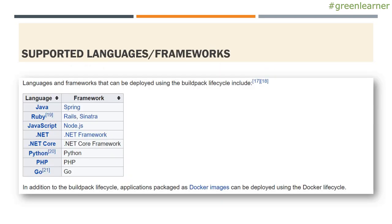The applications written in these languages and using those frameworks can be deployed into the PCF: Java, Ruby, JavaScript, .NET, .NET Core, Python, PHP, Go. They are deployed using the Buildpack lifecycle. Buildpack is a term inside PCF and we will see in the next videos what this is all about. In addition to the Buildpack lifecycle, Docker images can also be deployed using the Docker lifecycle. So Docker images can also be deployed on PCF.